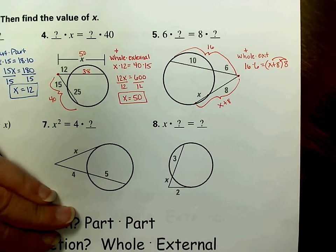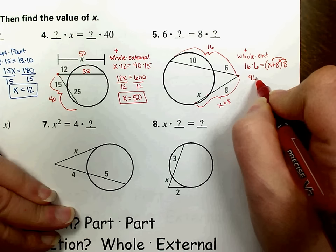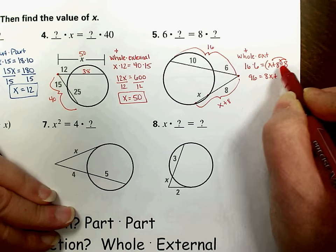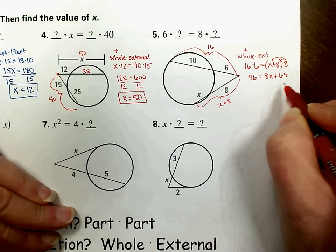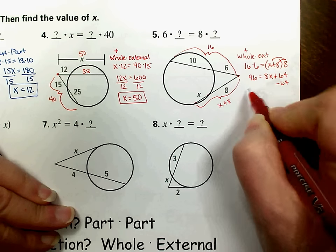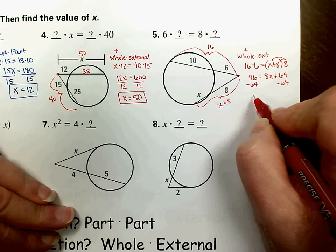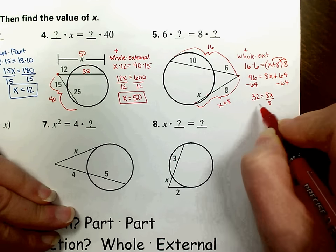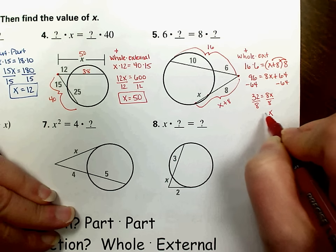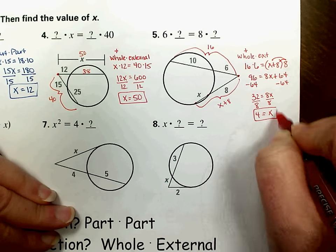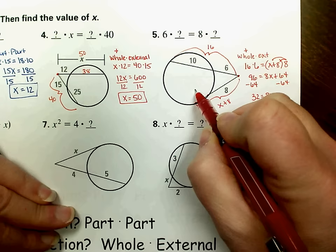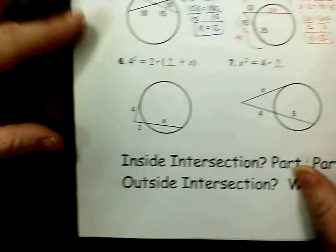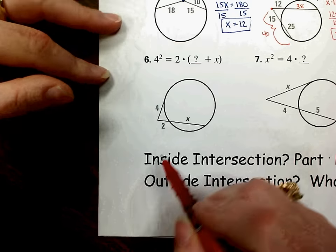So 16 times 6 gives us 96 on the left side. On the right side, 8 times x is 8x, plus 8 times 8 which is 64. So when we solve that two-step equation, we subtract 64 from both sides, get 32 equals 8x, and dividing both sides by 8, we get x equals 4. That's all we were asked to do — find that value of x, which is 4.